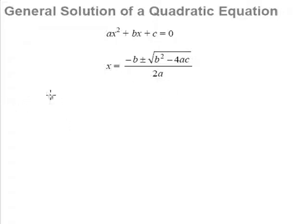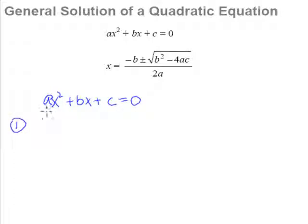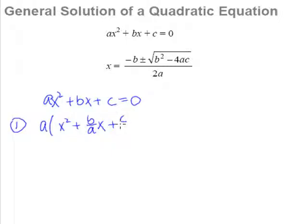First of all, let us copy down the typical quadratic equation that we always have, equal to zero. So let us do it step by step using completing the square. For the first step, we shall make the x squared coefficient equal to 1, so we shall take out 'a', and we'll end up with b over a times x plus c over a. This is the typical first step that we always do — we must always make sure that the coefficient of x squared is 1.